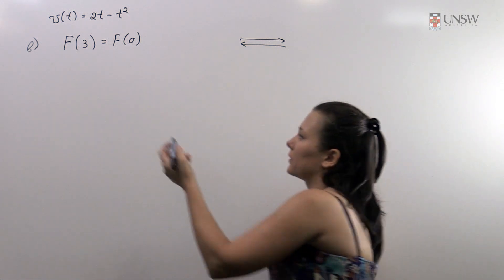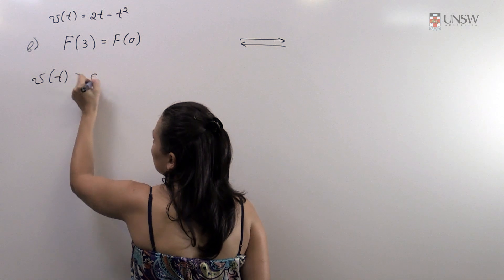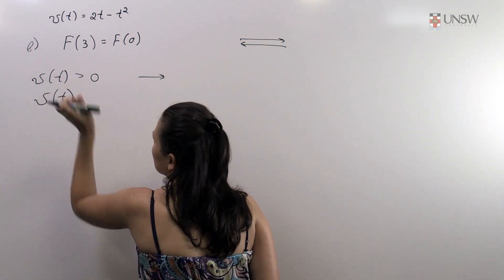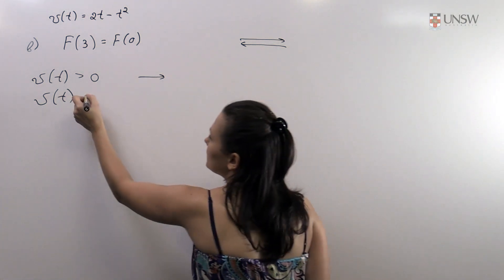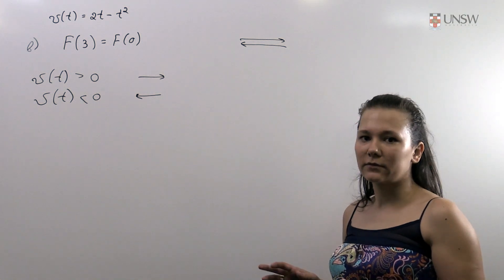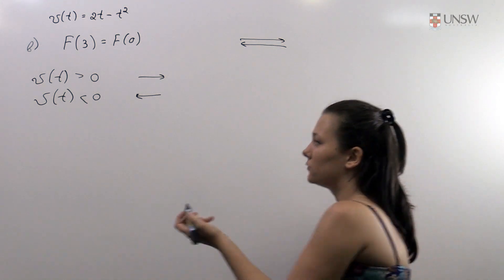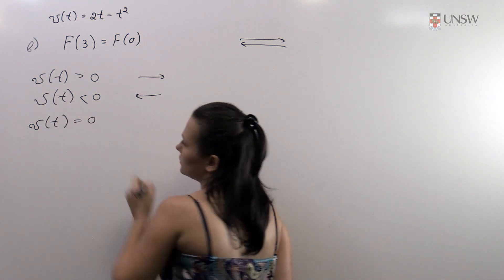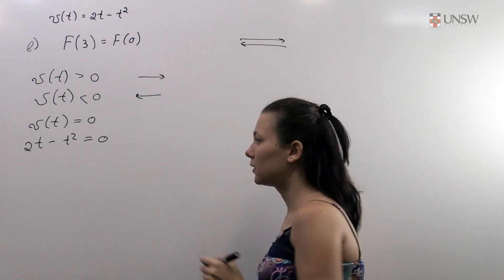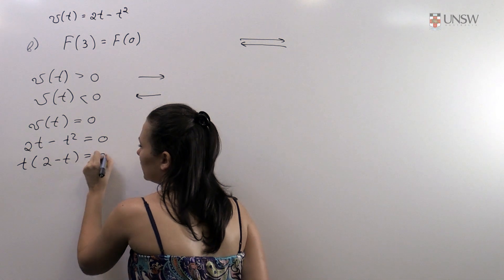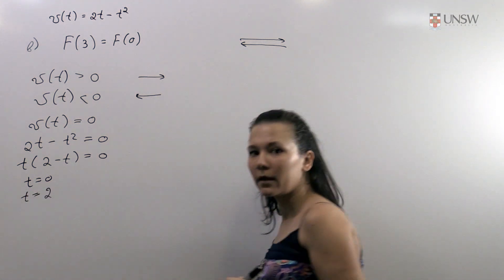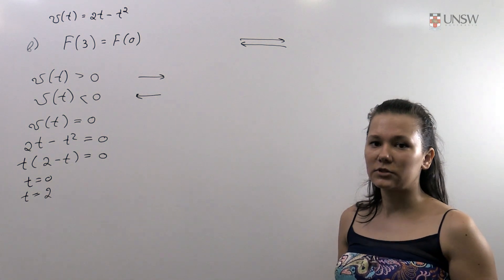To find the total distance we need to remember that when the velocity is strictly greater than zero, our particle moves in the positive direction, and when velocity is strictly less than zero, the particle moves in the negative direction. So we need to find when our particle changes direction, which means finding when velocity equals zero. Setting 2t minus t squared equals zero gives t(2 minus t) equals zero, so t equals 0 or t equals 2. At these points our particle changes direction.